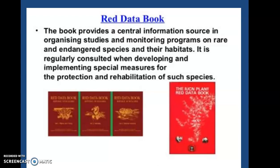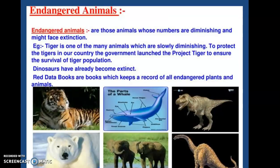The first Red Data Book was published in 1991. This book usually gives a record of all the endangered animals, plants, and other species — that is why it is called the Red Data Book. Endangered species are those animals whose numbers are diminishing and might face extinction. For example, the tiger is one of the many animals slowly diminishing. To protect tigers, the government launched Project Tiger to ensure the survival of the tiger population. Dinosaurs have already become extinct.